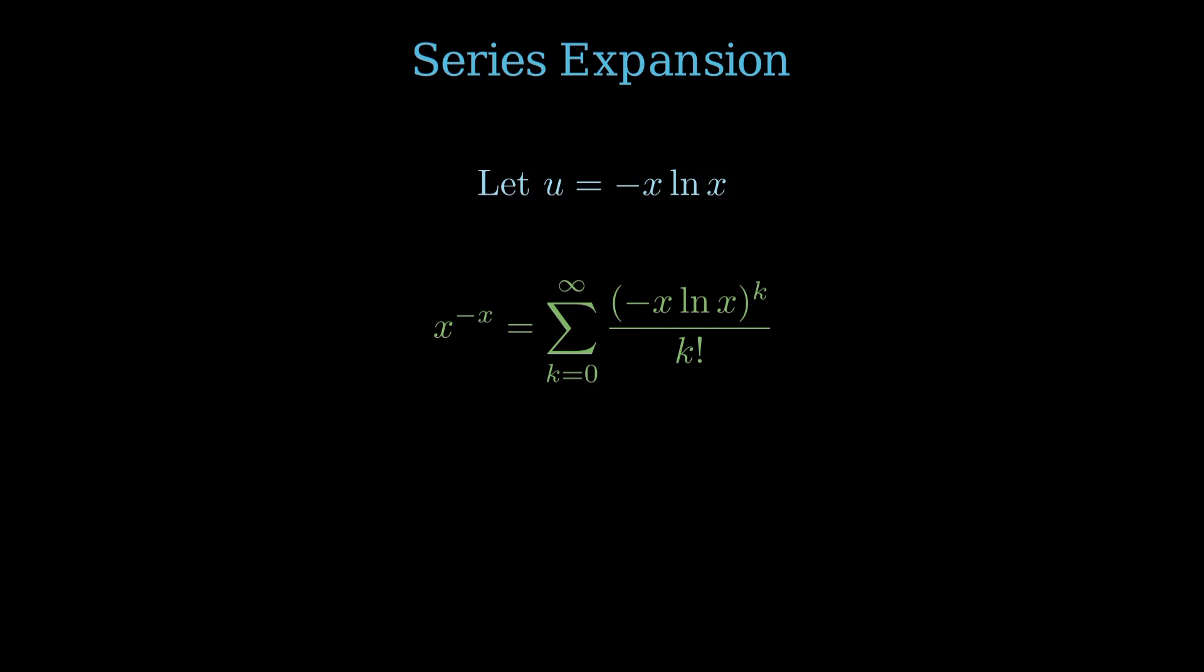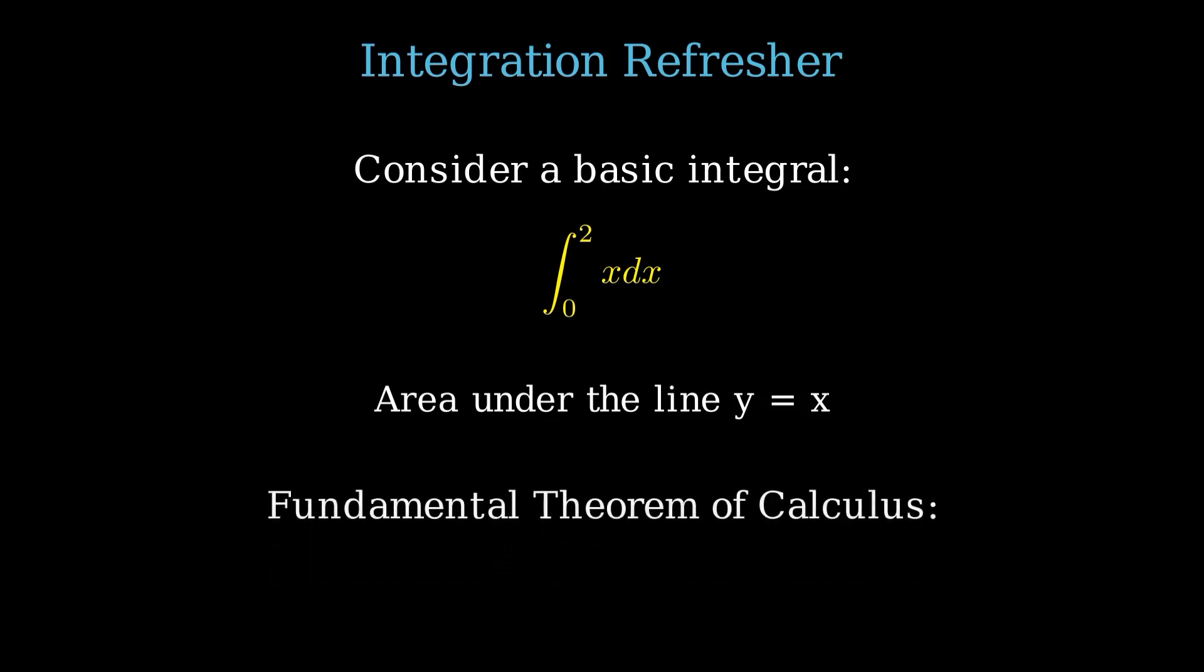Before we tackle the main event, let's quickly refresh basic integration. Consider the integral of x from 0 to 2. This represents the area under the line y equals x between these points. We find the antiderivative, x squared over 2, then evaluate it at the limits, 2 squared over 2 minus 0 squared over 2, which gives us 2. This is the power of the fundamental theorem of calculus, a gift from Newton and Leibniz.